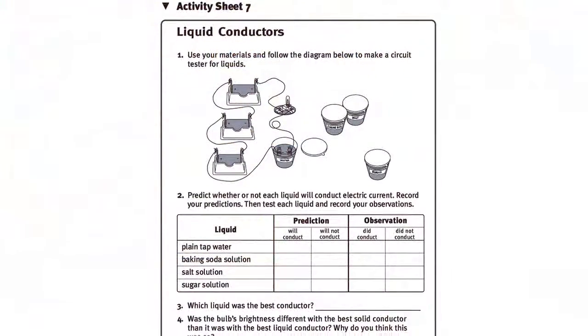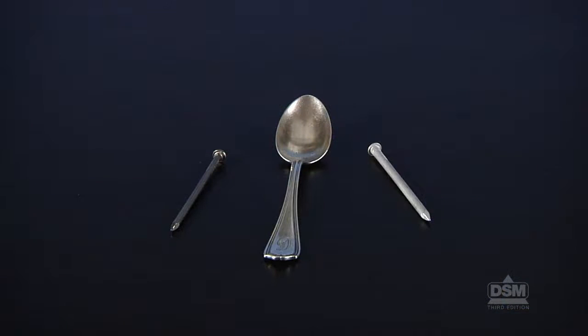To prepare for the activity, make a copy of Activity Sheet 7 for each student. Review the Activity Sheets from Activity 6 to see which item proved to be the best solid conductor. Collect 16 samples of this item.